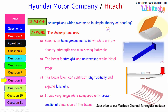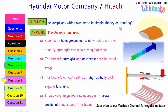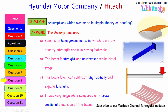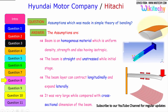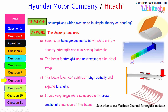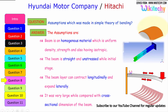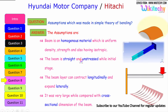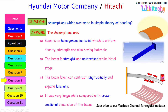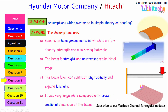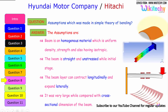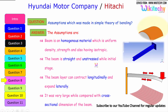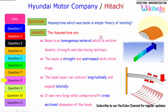What are the assumptions made in the simple theory of bending? The assumptions are: the beam is made of a homogeneous material with uniform density, uniform strength, and is isotropic. The beam is straight and unstressed in its initial stage. The beam can contract longitudinally and expand laterally. The radius of curvature is very large when compared with the cross-sectional dimensions of the beam.